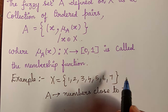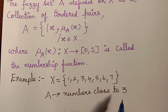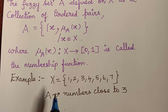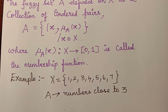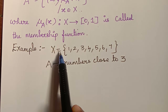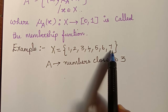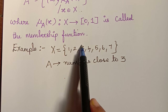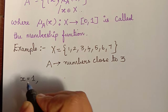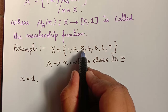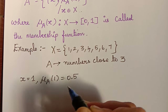In this universal set we are considering the fuzzy set A, which is defined as numbers close to 3. We follow the notations as per the prescribed textbook. Now we have to evaluate this set — for each number we have to find the membership value as per the degree of its closeness to the number 3. For example, if x = 1, we can see that 1 is somewhat closer to 3, so we can have the membership value for 1 equal to 0.5. This is absolutely manual.